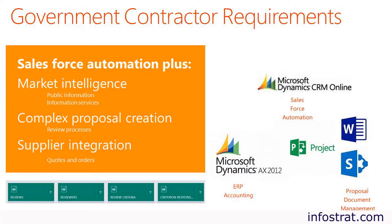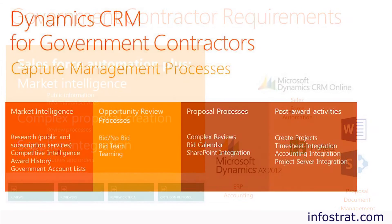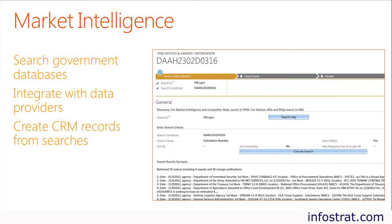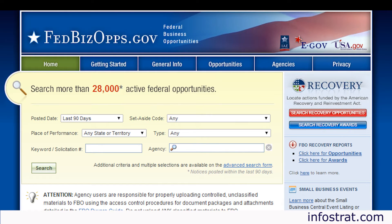Sales processes for government contracts are different from typical commercial sales. Government procurement cycles are longer than commercial purchases and involve many formal steps such as pre-solicitation notices, requests for information, requests for quotes, and requests for proposals. This solution simplifies the capture process by allowing users to search for opportunities from online databases within Dynamics CRM and importing those search results into CRM records.